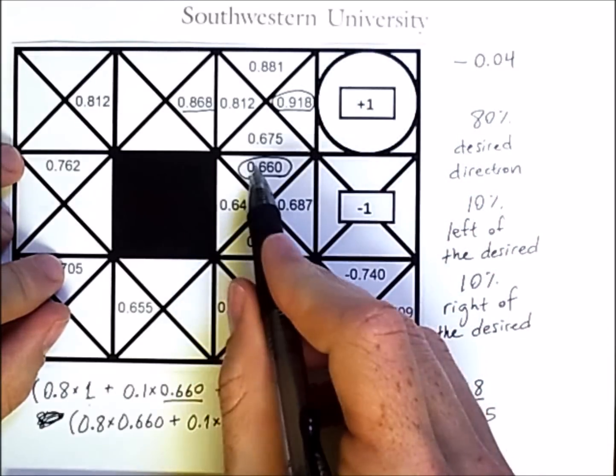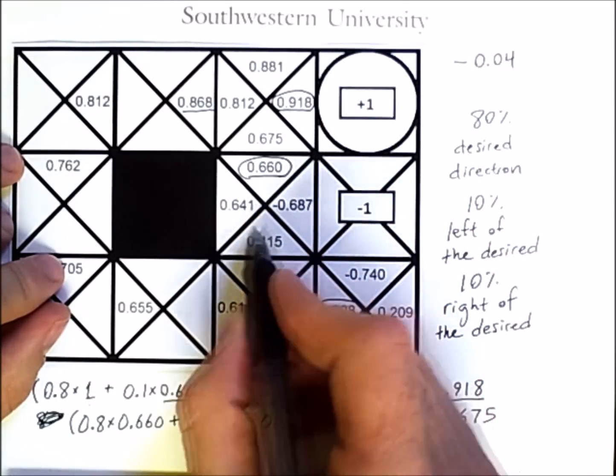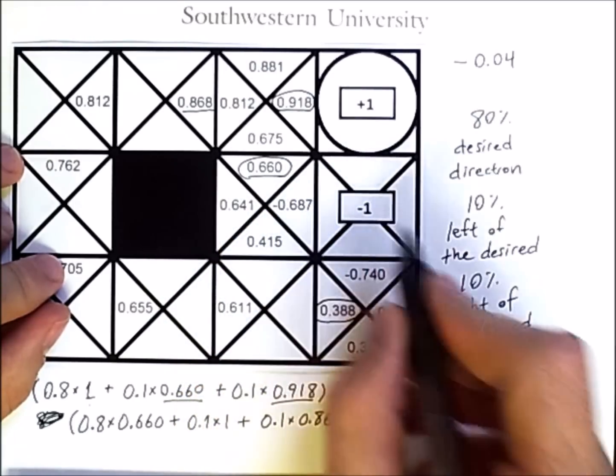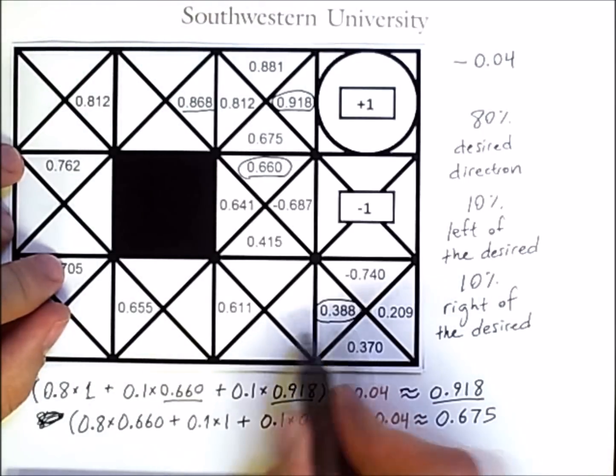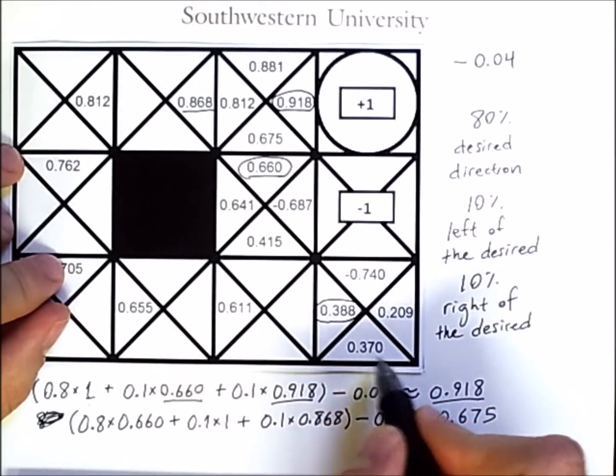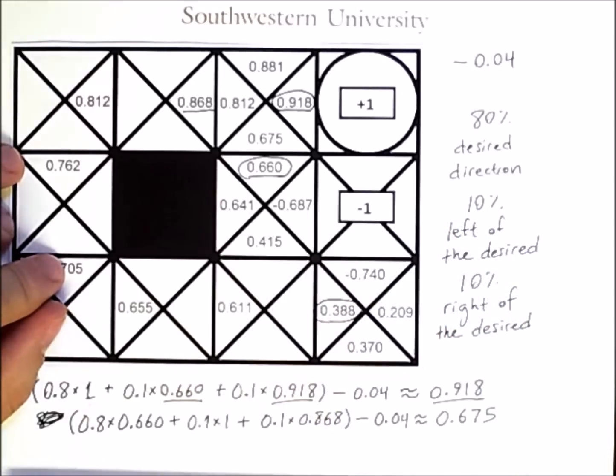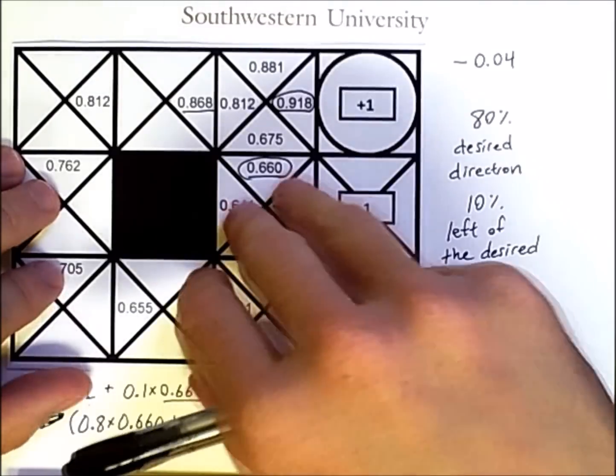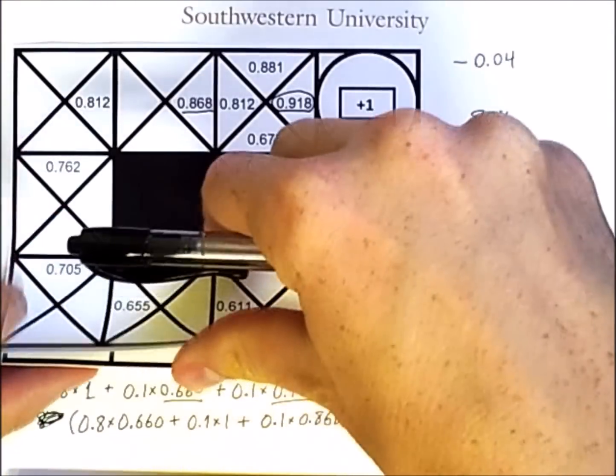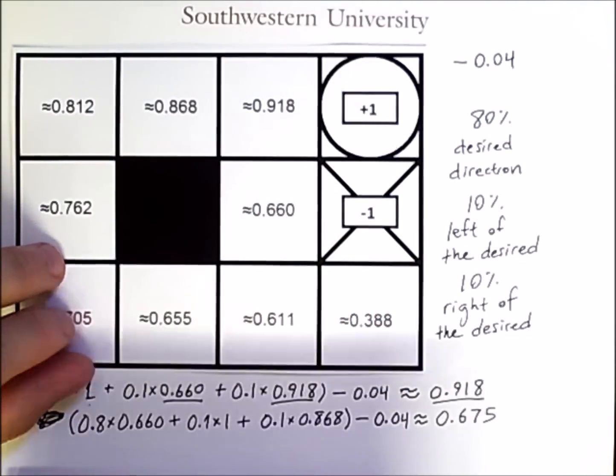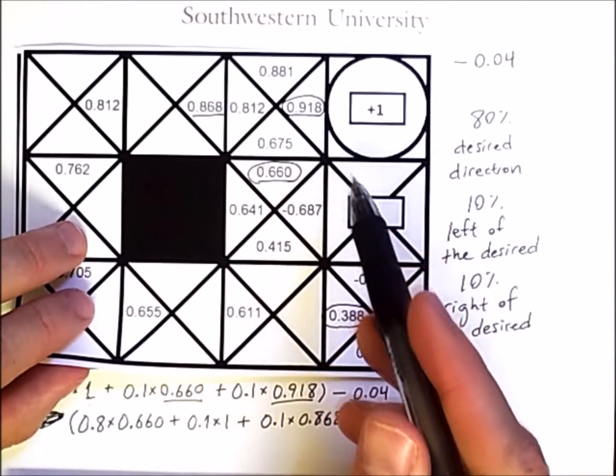Here, moving up has a higher expected value than moving left, down, or to the right. It's a negative value there. And here, moving to the left has a higher expected value than any of the other options. So that's why the actual state value in each of those states is the same as the best Q value.